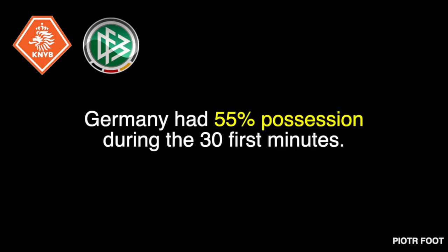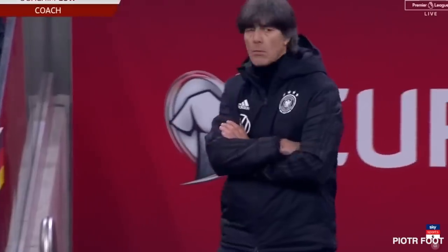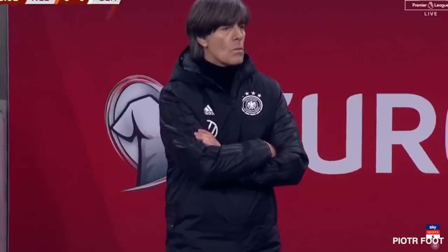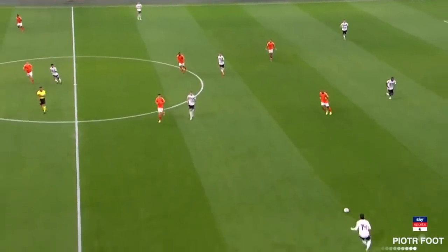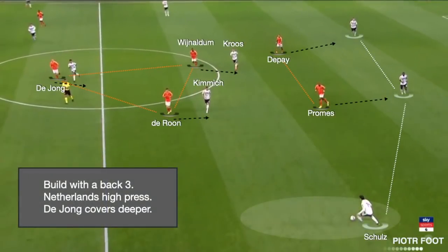The Germans started the game with 55% possession during the first 31 minutes. Germany would build with three men at the back — Schultz acting as a third centre-back on this specific action. The Dutch tried pressing high on their short build-up, with Wijnaldum and Depay pressing on Kroos and Kimmich, while De Jong would cover his zone a little bit deeper.